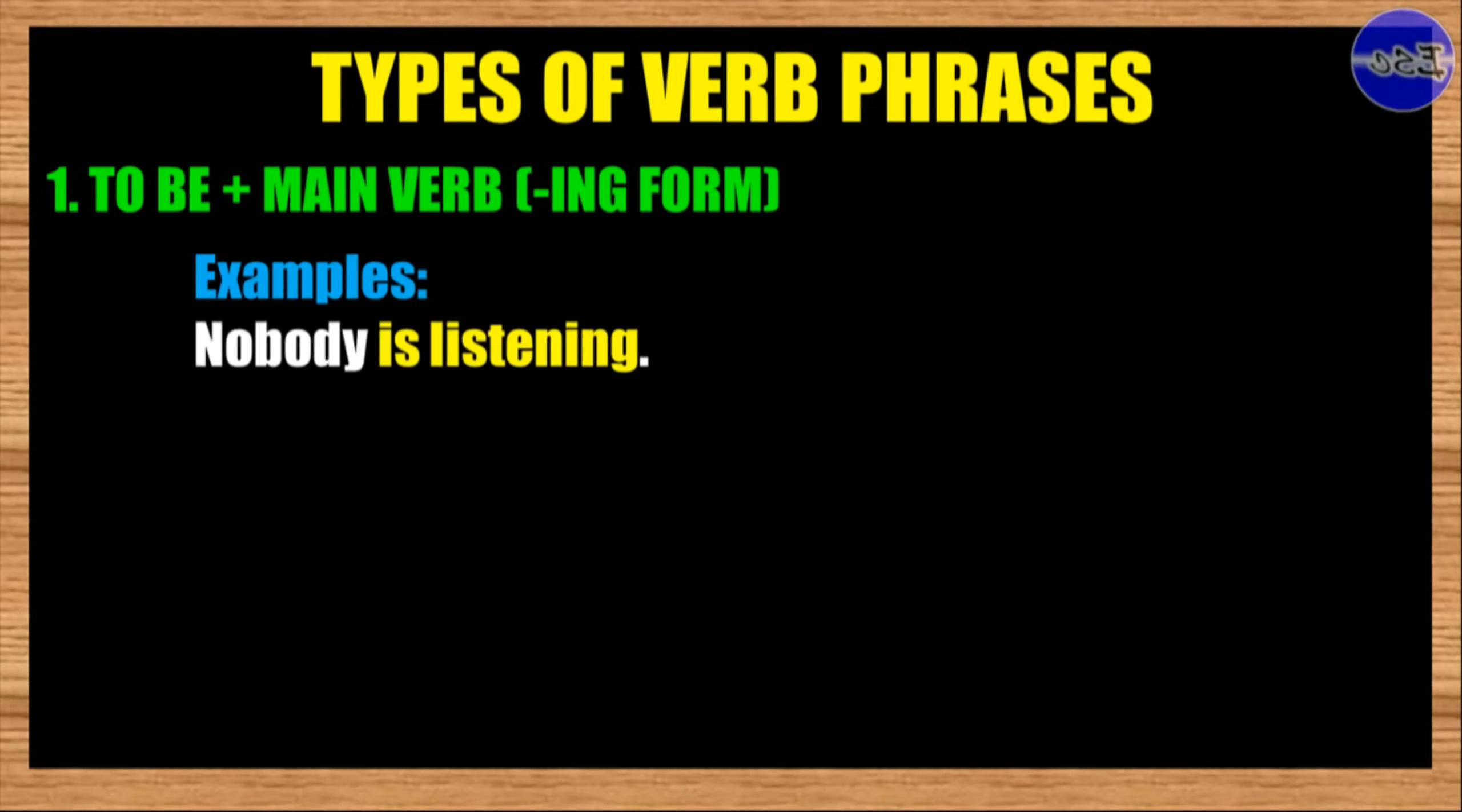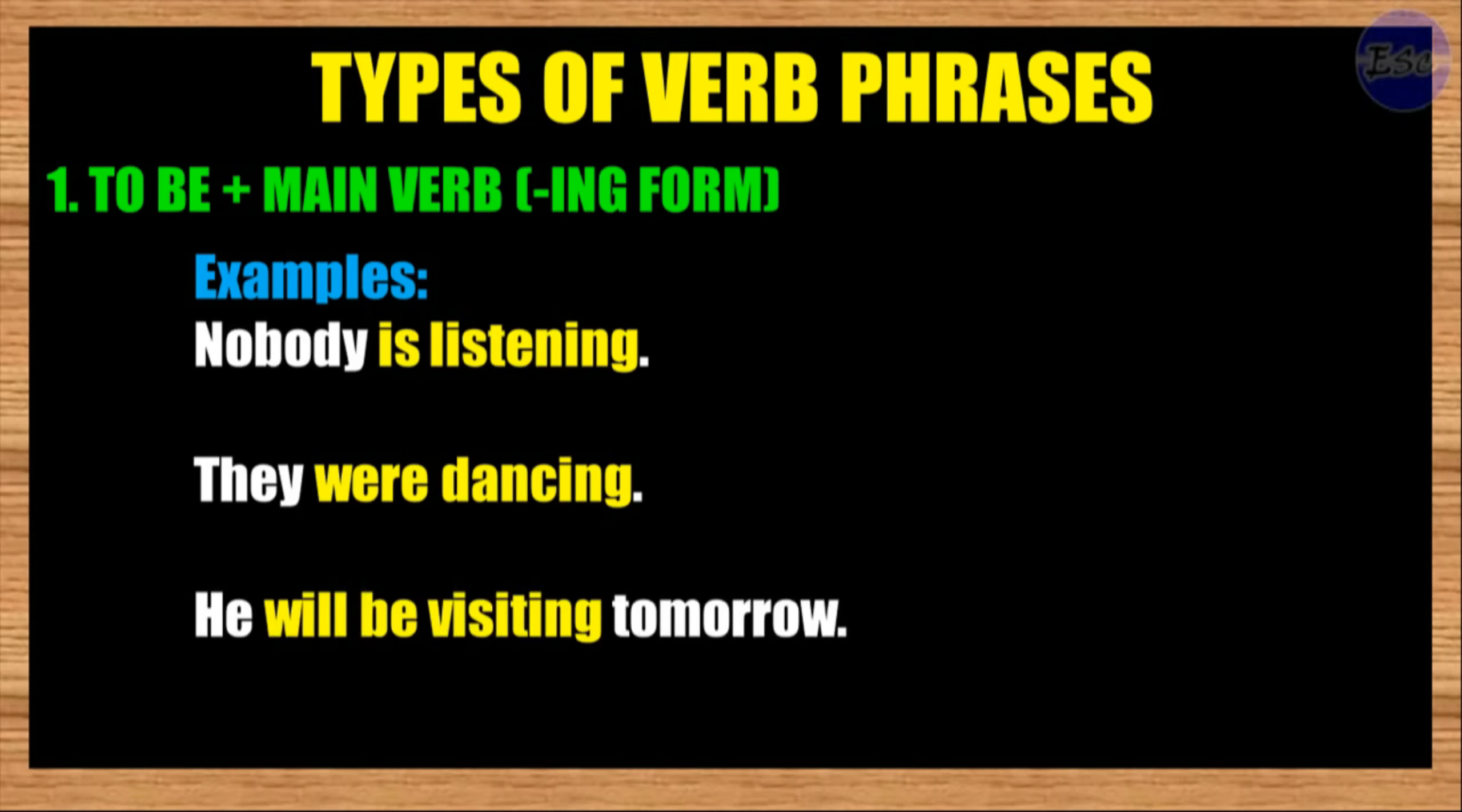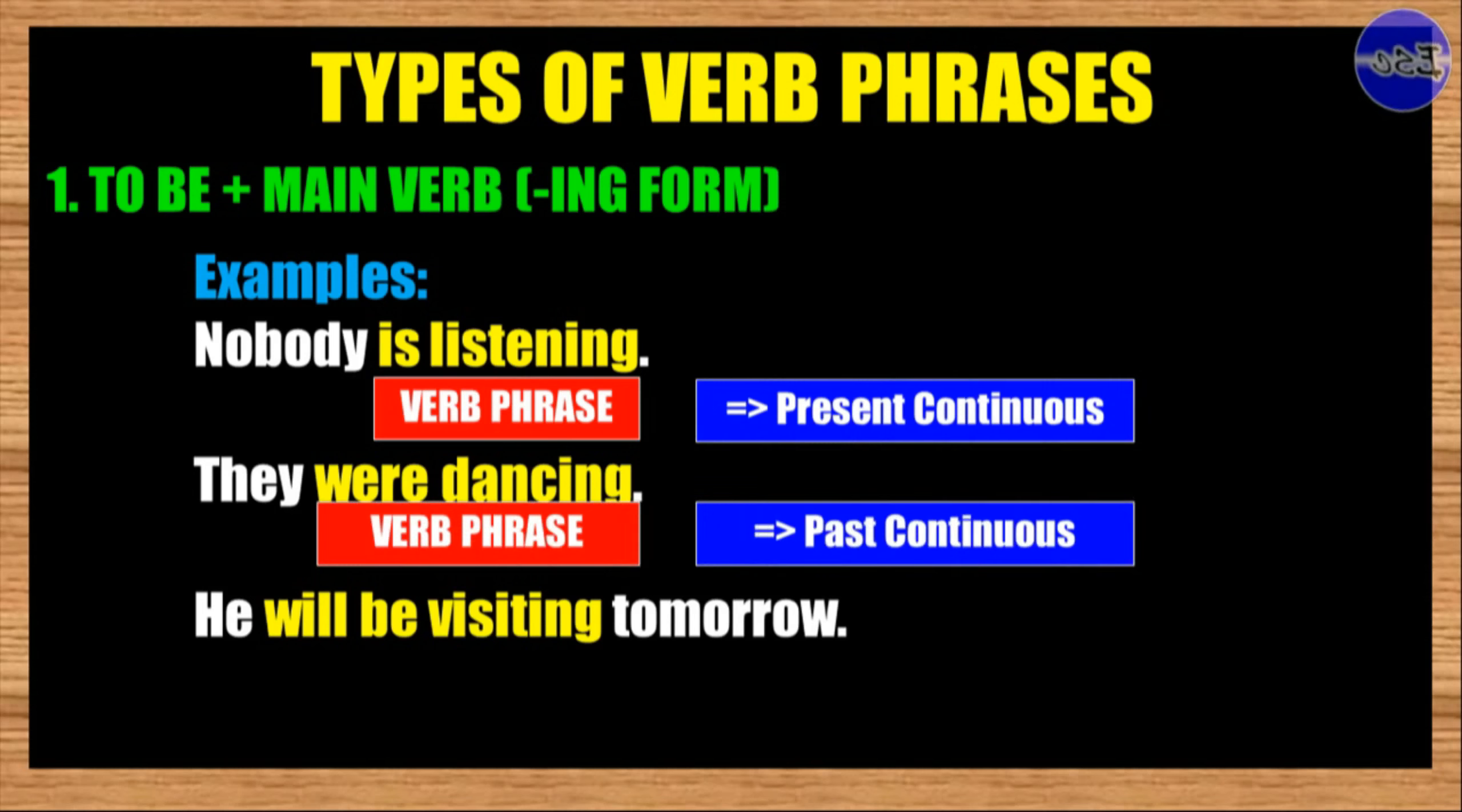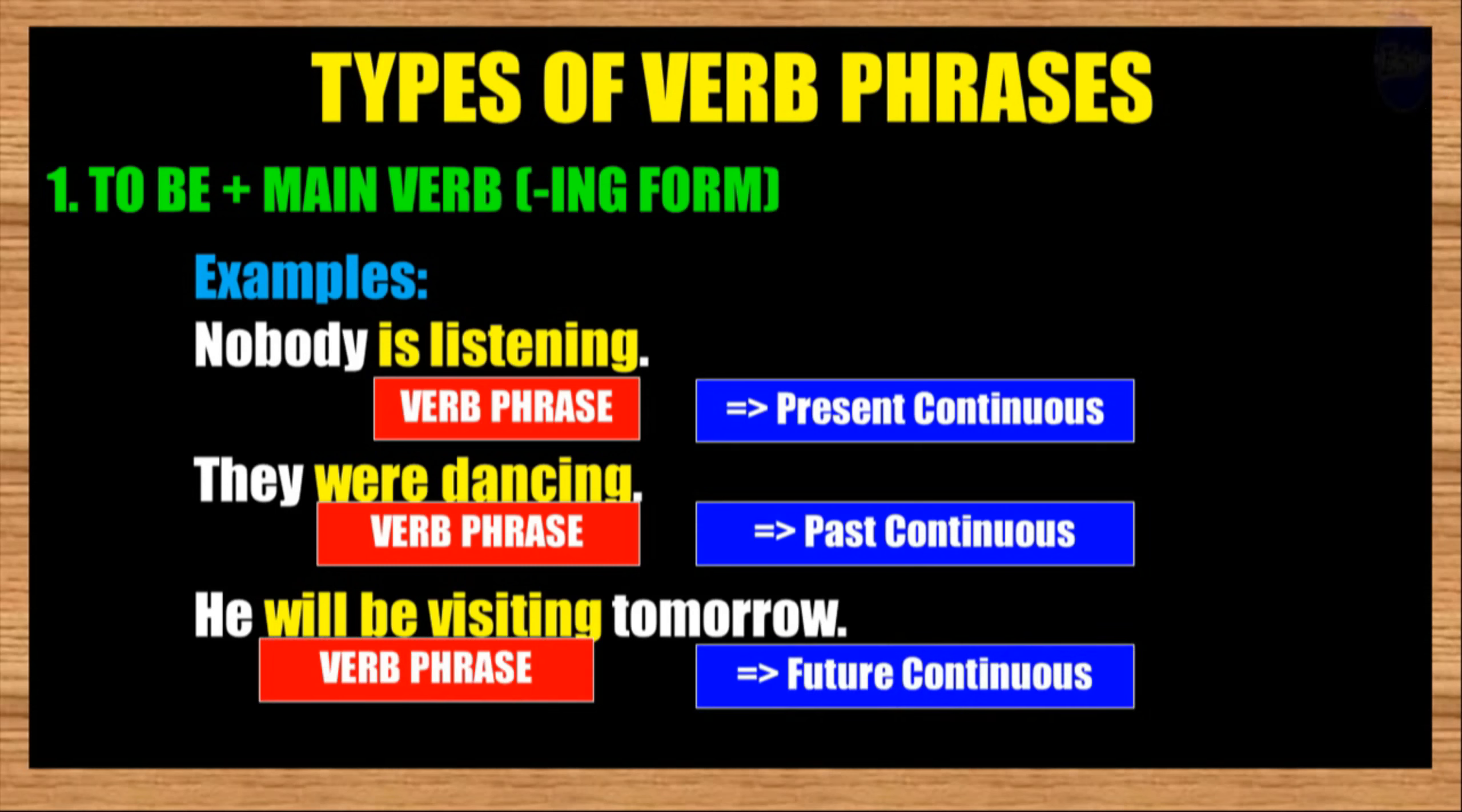Examples: Nobody is listening. They were dancing. He will be visiting tomorrow. In the first sentence, nobody is listening, 'is listening' is the verb phrase. And this sentence is in the form of present continuous. In the second example, they were dancing, 'were dancing' is the verb phrase. This sentence is in the form of past continuous. And in the last example, the sentence 'he will be visiting tomorrow,' 'will be visiting' is the verb phrase. And this sentence is in the form of future continuous tense.